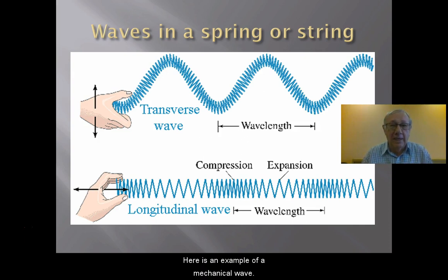Here is an example of a mechanical wave. It's a wave that's in a spring or a string. Now the reason why it's called a mechanical wave is that it requires a medium. Now a medium is a substance that allows the wave to travel through it. So in this particular case what we've got is a spring. So the spring is the medium.